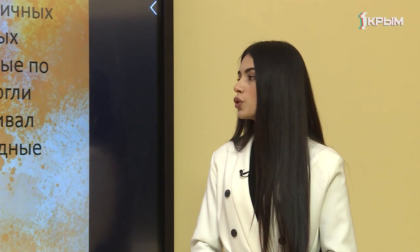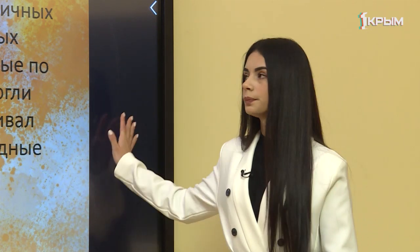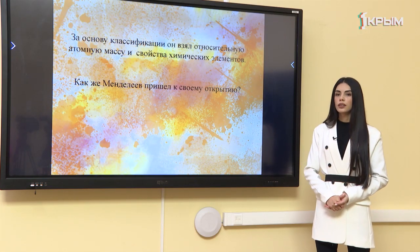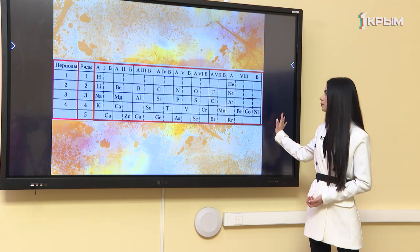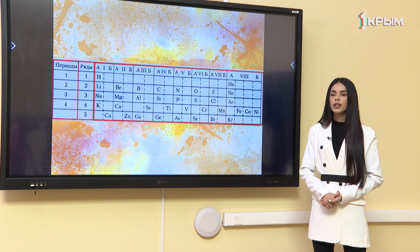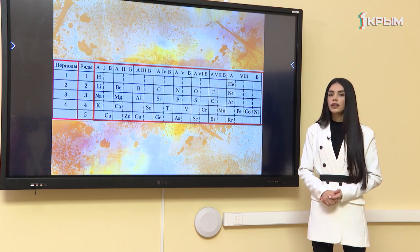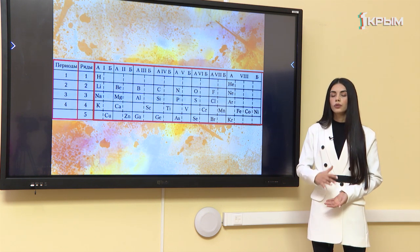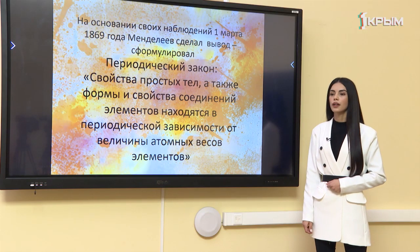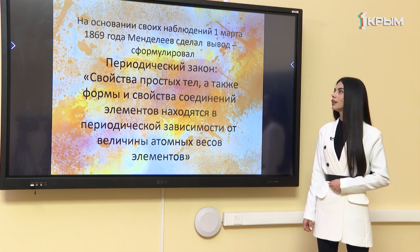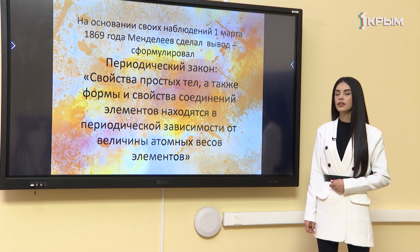Большинство учёных ориентировались только на сходные свойства элементов, поэтому не смогли открыть закон. Менделеев же сравнивал между собой все элементы, в том числе и несходные. За основу классификации он взял относительную атомную массу и свойства химических элементов. Он написал на карточках все изученные химические элементы, разрезал их и уложил так, чтобы относительная атомная масса увеличивалась в периодах. В результате напряжённого творческого труда он обнаружил, что свойства химических элементов и образованных ими веществ изменялись сходным образом, периодически.